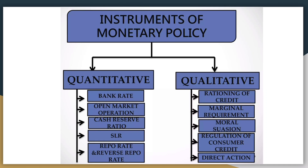तीसरा है cash reserve ratio — यह वो ratio होता है जिसमें banks अपना कुछ percent RBI के पास deposit करके रखती हैं reserve और balance के लिए — 3%, 5% या 10% हो सकता है। अगर cash reserve ratio ज़्यादा होता है तो liquidity कम होती है, और अगर कम होता है तो liquidity ज़्यादा होगी। यह 3-15% के बीच में change होता रहता है। चौथा है statutory liquidity ratio — यह वो percent होता है जो bank assets के रूप में बना के रखना ज़रूरी है, वरना fine charge होगा। Bank कुछ liquid assets या money अपने पास रखती है — government securities, treasury bills, other securities के लिए — यह भी deposit का part होता है, RBI इसे रखवाती है ताकि bank liquidity बनाए रखे और कम credit या loan लोगों को दे।